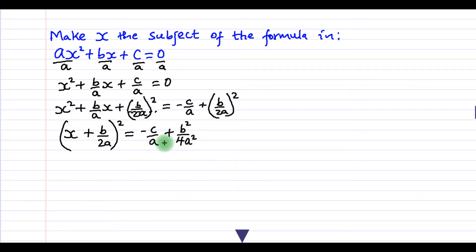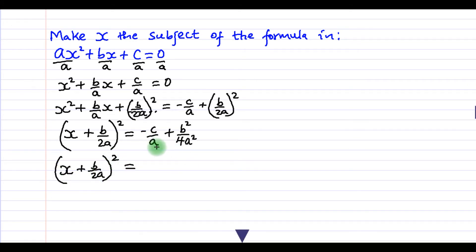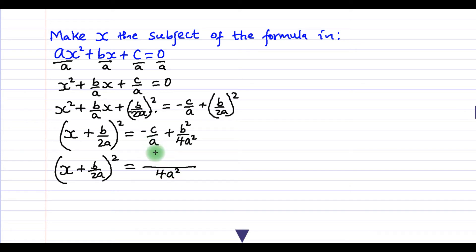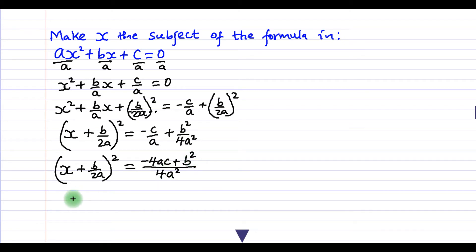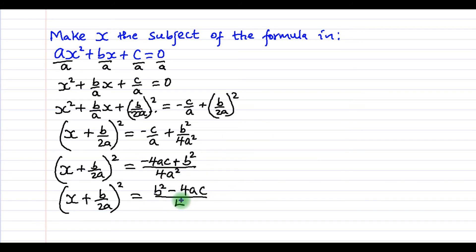We now simplify the right hand side. Rewriting the left hand side as x plus b over 2a squared, the LCM of a and 4a squared is 4a squared. So 4a squared divided by a gives 4a, multiplied by c gives minus 4ac. Then 4a squared divided by 4a squared is 1, multiplied by b squared gives b squared. Therefore we get x plus b over 2a, all squared, equals b squared minus 4ac, all over 4a squared.